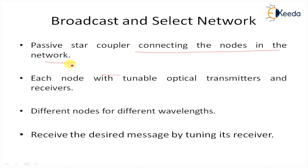The broadcast and select network consists of a passive star network. Each node in the network is equipped with one or more fixed-tuned or tunable optical transmitters and one or more fixed-tuned or tunable optical receivers. Different nodes transmit messages on different wavelengths simultaneously and receive the desired message by tuning their receiver.